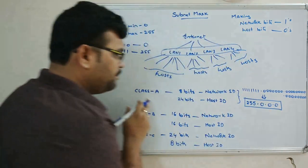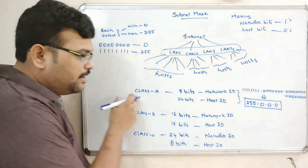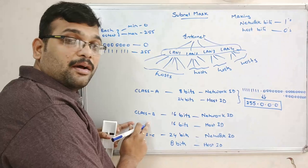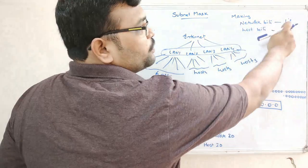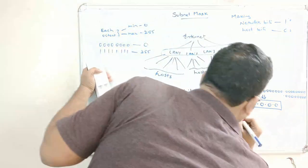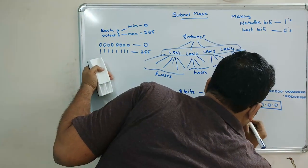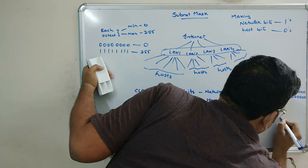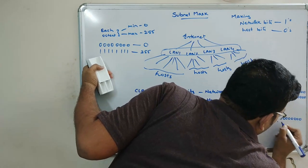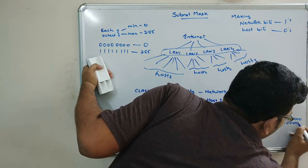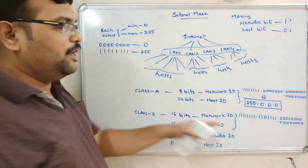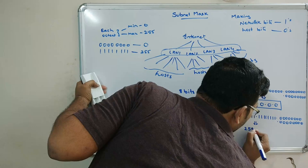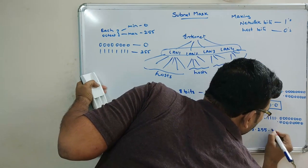So the subnet mask for class A is 255.0.0.0. For class B, the first 16 bits are the network ID, so make all network bits 1 and host bits 0. The first two octets will be all 1s and the last two octets will be zeros, giving a subnet mask of 255.255.0.0.